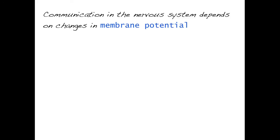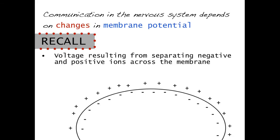As you will recall from the electrochemical gradient video, communication in the nervous system is absolutely dependent on changes in membrane potential. To define what membrane potential is, it's the voltage resulting from separation of negative and positively charged ions across the membrane. On the inside of the membrane, there's more negatively charged proteins, while on the outside there's very little protein but an abundance of sodium.